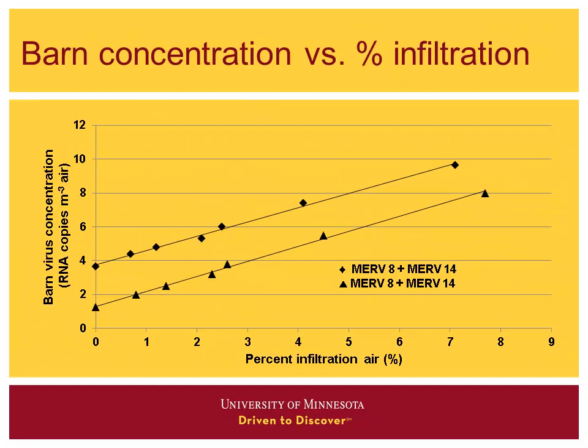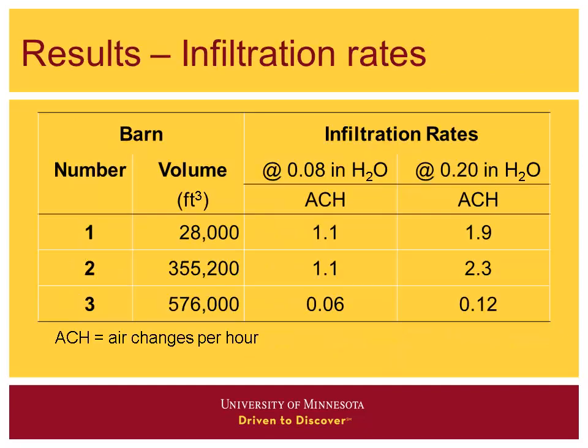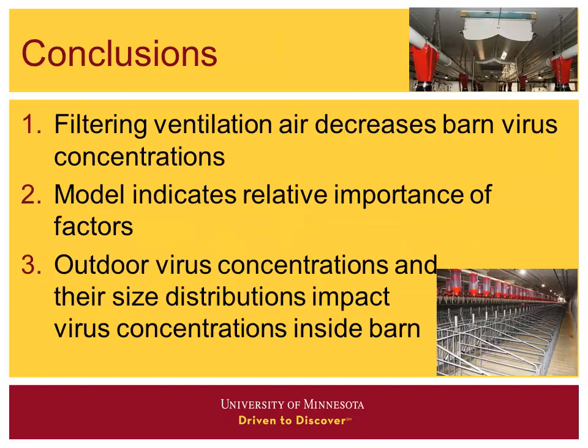Taking all those numbers together, we can see a relationship between percent infiltration and the RNA copy concentrations in the barns — it's not quite totally linear, but it's pretty close. That really indicates the importance of infiltration rates. Of the three barns we monitored, two had higher infiltration rates — barn one and two — at 1.1 to 1.9 and up to 2.3 air changes per hour. But barn three had a much, much better reduced infiltration, which will have a big impact on what's going through.